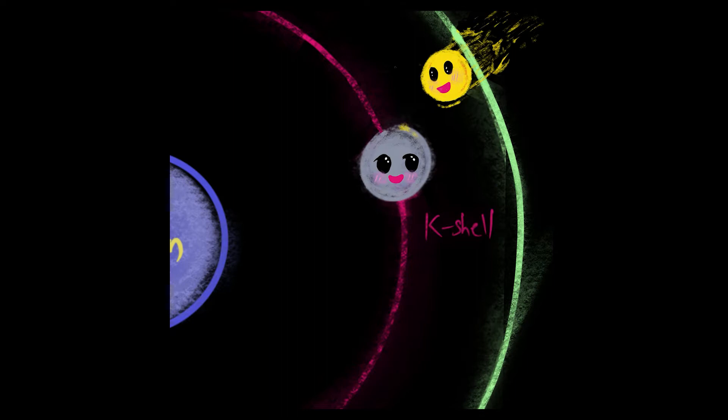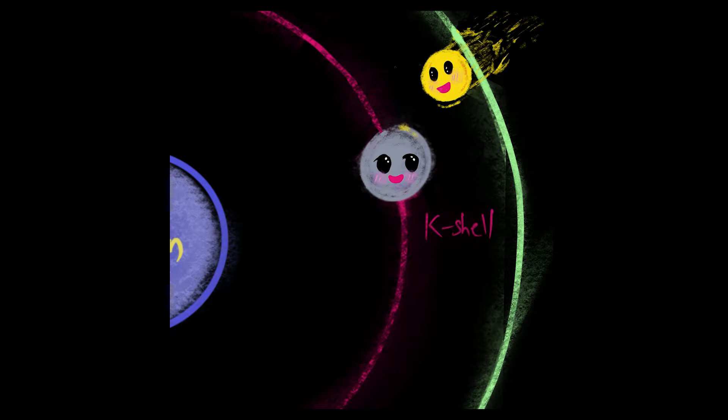For a hydrogen atom, a transition from the second to the first orbit emits a photon of wavelength 1216 angstroms. This is known as the Lyman alpha emission. Similarly, we have Lyman alpha absorption.